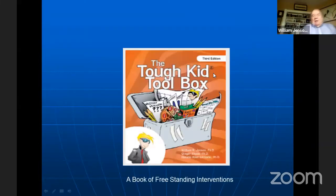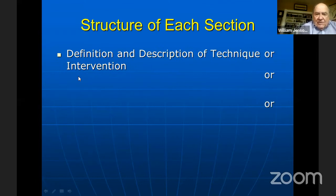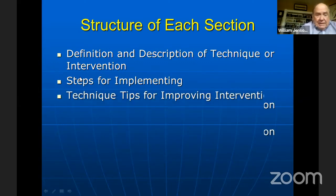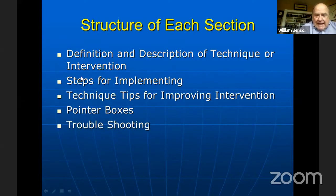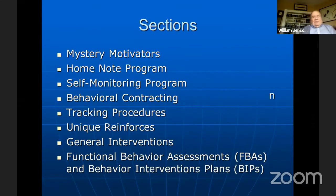Moving to the Tough Kid Toolbox — remember, the Tough Kid Book is a conceptualization and system; the Toolbox is a set of freestanding interventions. Each intervention section includes a description, step-by-step implementation, how to improve it once running, pointer boxes, troubleshooting guidance for common issues, and downloadable hard-copy reproducibles in English and Spanish.